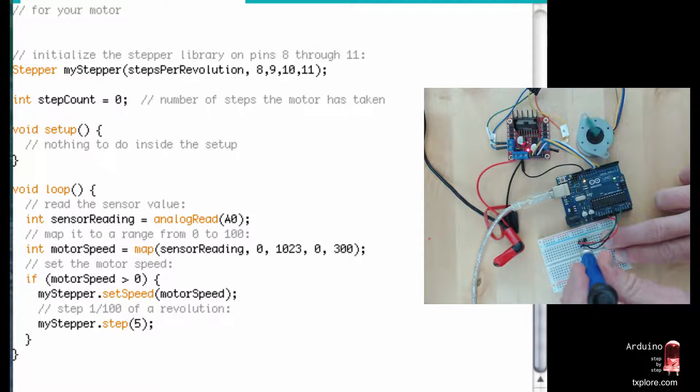It doesn't look like it. It's not obviously missing any steps. I think it is moving a little faster than earlier. So taking, in this case, five steps at a time seems to be able to move the motor faster.